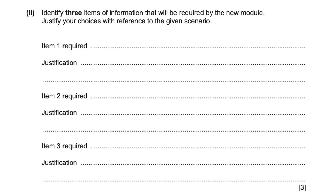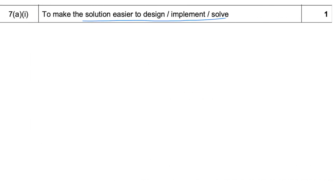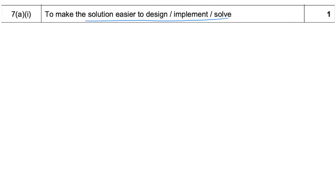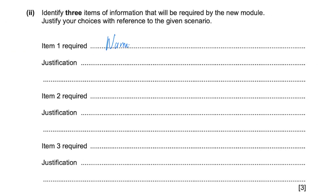Next question: identify three items of information that will be required by the new module and justify your choices with reference to the given scenario. We want to send a personalized text message, so we'll probably need the name of the person — member name — for personalization. We're going to need a phone number because it's a text message. Also we would need the exercises that they are interested in, probably a list of exercises, to know when to send them a text message.